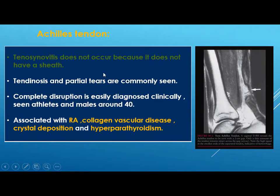The Achilles tendon does not have a sheath, so tenosynovitis does not occur, but tendinosis and partial tears are common. Complete disruption is easily diagnosed clinically and is seen in athletes and males around age 40. It is associated with rheumatoid arthritis, collagen vascular disease, crystal deposition, and hyperparathyroidism.